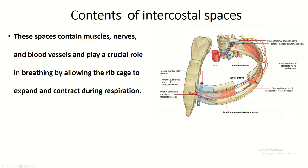The contents of the intercostal space include intercostal muscles: external intercostal, internal intercostal, and innermost intercostal. The neurovascular bundle is present within the muscles. There are two anterior intercostal vessels and one posterior intercostal vessel. The anterior intercostal artery is a branch of the internal thoracic artery, which is a branch of the subclavian artery. The posterior intercostal artery is mainly a branch of the descending thoracic aorta. There is also the intercostal nerve, which is a branch of the ventral rami of the upper thoracic spinal nerve.